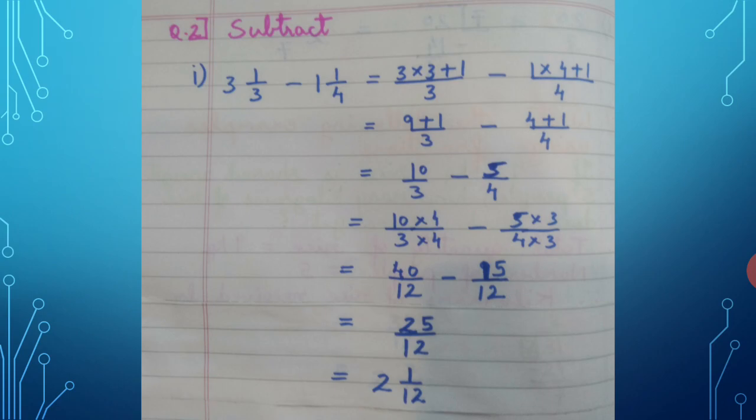10 × 4 = 40 and 5 × 3 = 15. So 40 − 15 = 25 upon 12. Dividing 25 by 12: quotient is 2, remainder is 1, divisor is 12. Final answer is 2 and 1 upon 12.